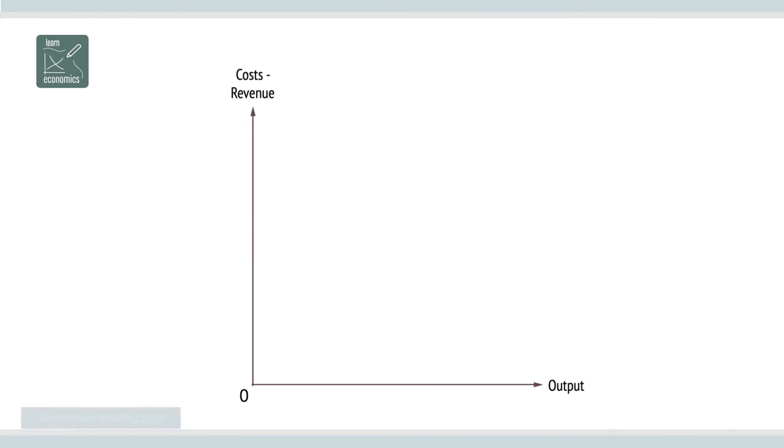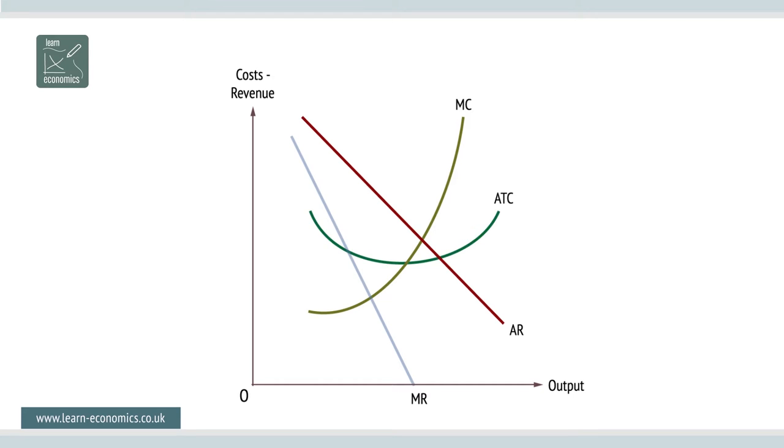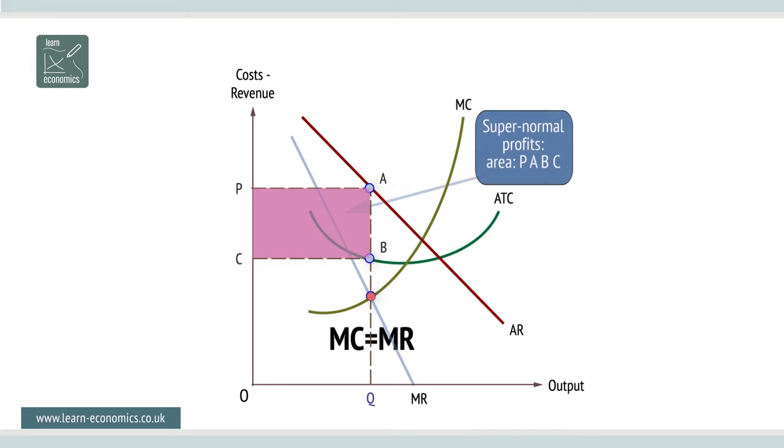Monopolists are single suppliers to a market with no competitors. Supernormal profits are shown as area P, A, B, C. Losses are also possible due to excessive average costs.